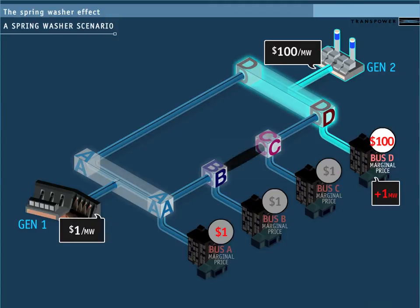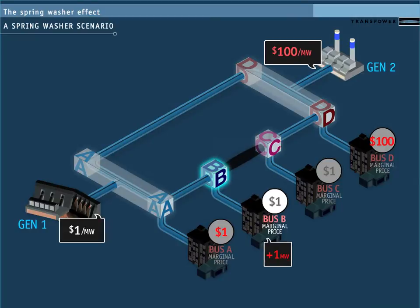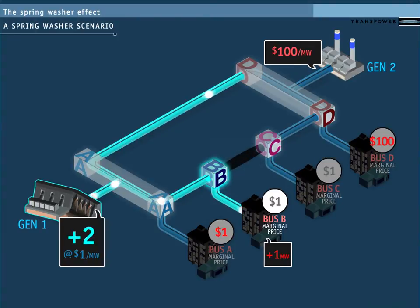Now let's look at the marginal price calculation for bus B. To supply the next megawatt of load at bus B, generator 1 would have to send 2 megawatts in total, because any power would be distributed evenly between the two lines.